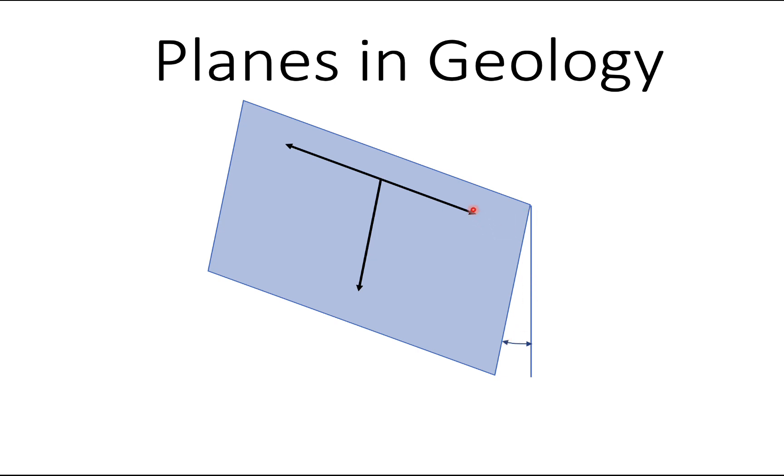So a vertical plane has a dip of 90 degrees. Then there's the direction of dip as well. So we have the strike, the angle of dip and the direction of dip.